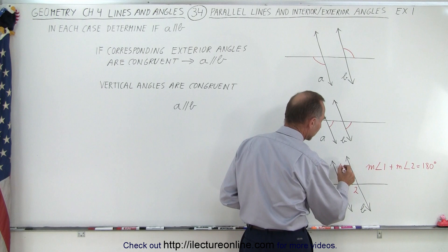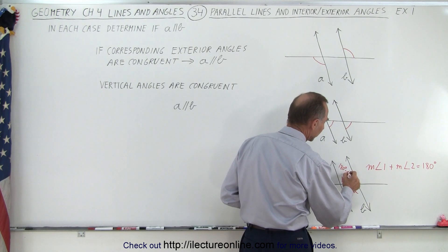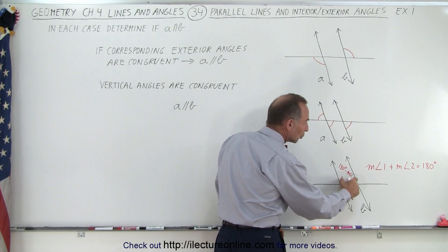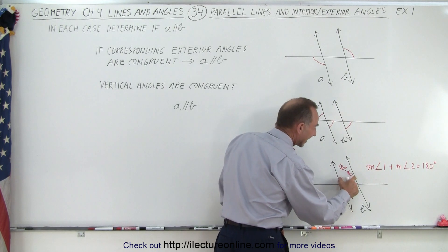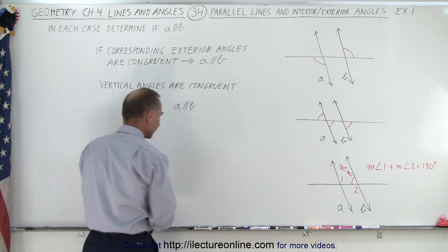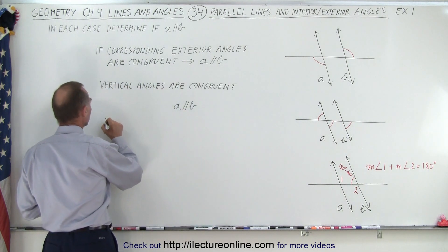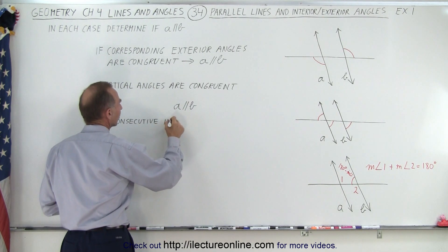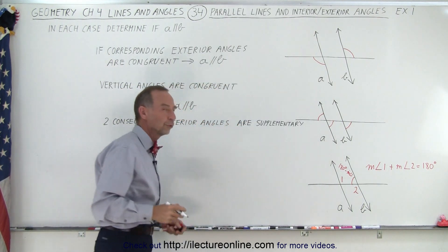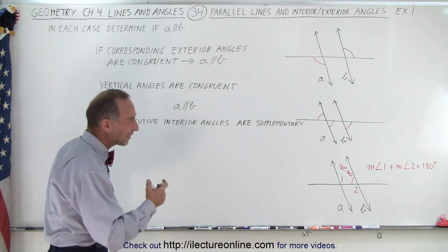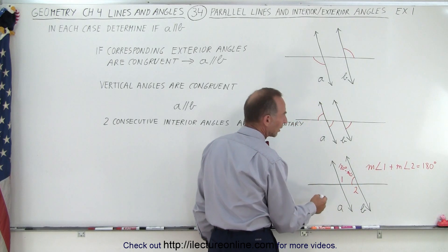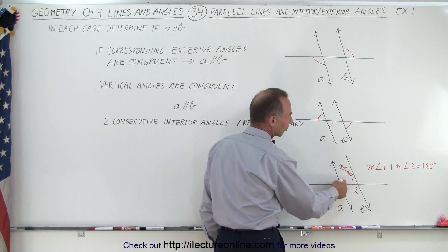So what I can then do is take a look at this angle right here — let me mark that. I know that this angle must be 180 degrees minus the measure of angle one, because these are two consecutive interior angles, and we know that two consecutive interior angles are supplementary. So this angle equals 180 degrees minus the measure of angle one.